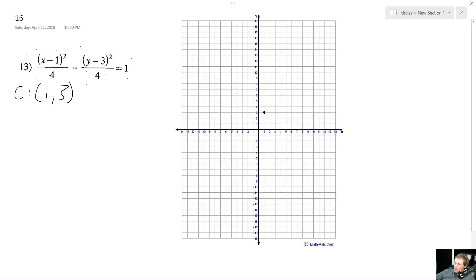All right, so the radius around that is just going to be the square root of each denominator. So it's going to be 2, 2. And it's going to open up left to right. So it's going to open up like this.